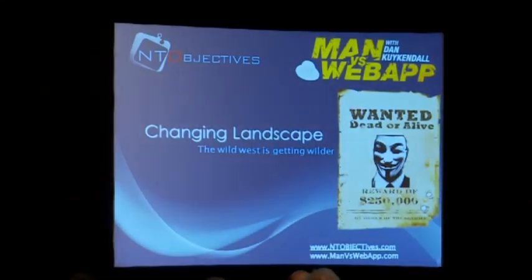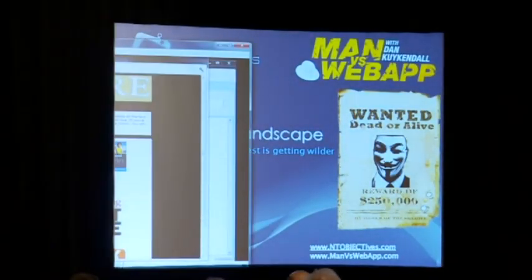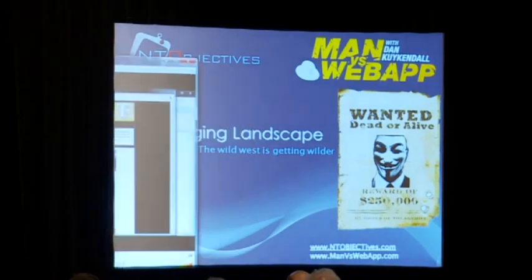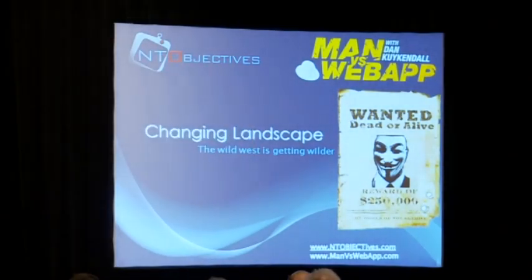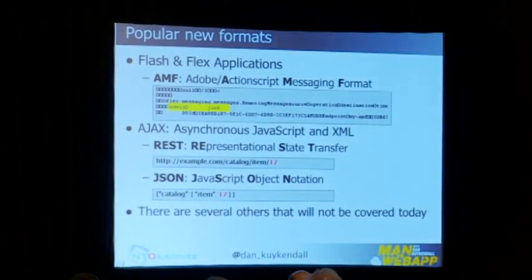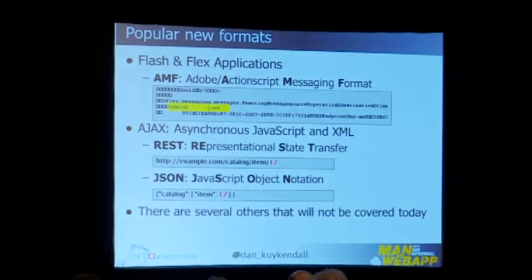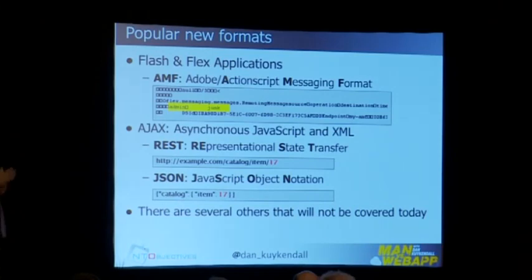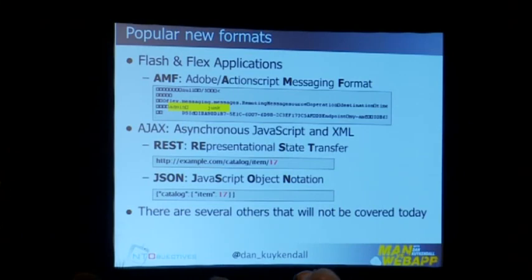Now we're not just dealing with name-equal-value pairs anymore. We're dealing with these other formats. AMF is going to look like binary data in the POST field — in the POST section of the header and the request, the AMF traffic is binary. You're going to see REST-based traffic and JSON. I'm going to explain each one of these for those of you that may not be as familiar.